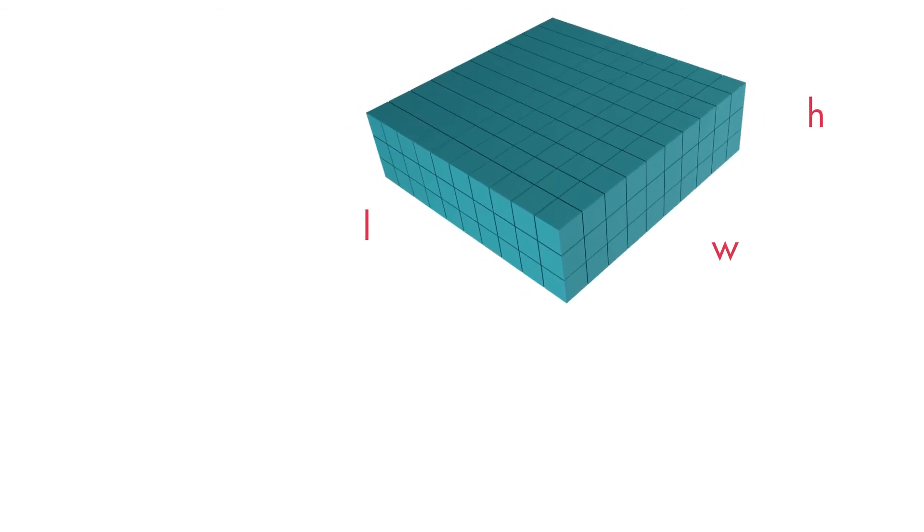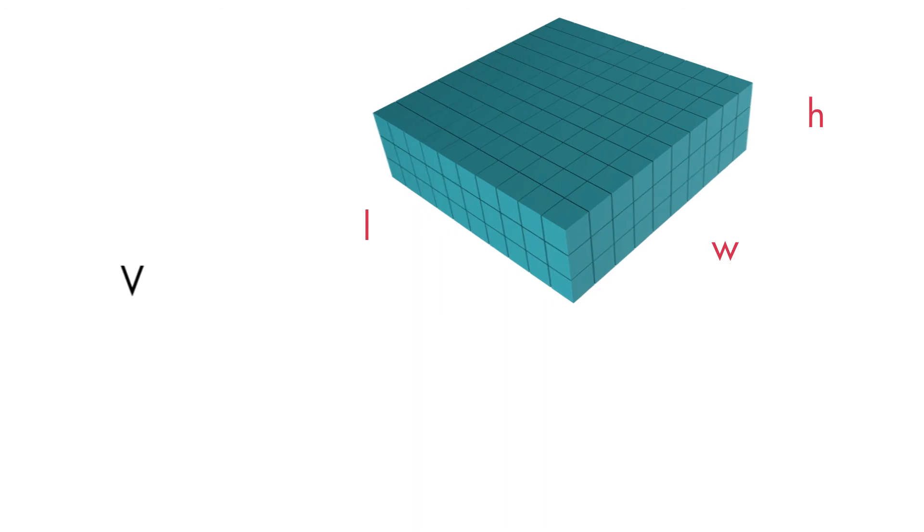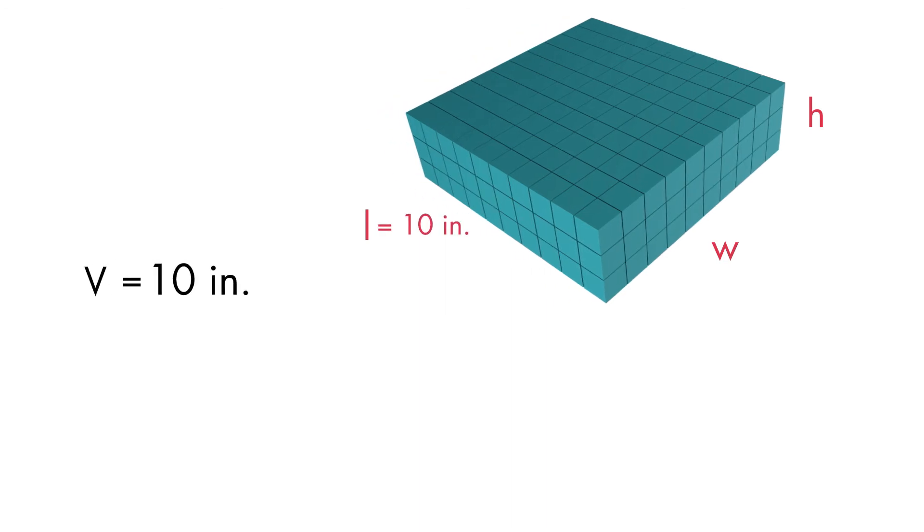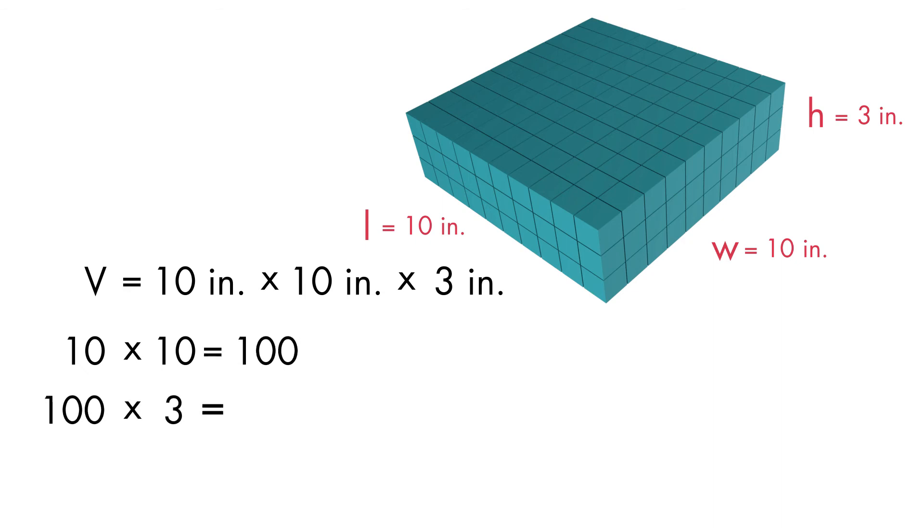To find the volume of the second shape, we write the equation Volume equals 10 inches times 10 inches times 3 inches. 10 times 10 is equal to 100 and 100 times 3 is equal to 300. So, the volume of the second shape is 300 cubic inches.